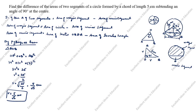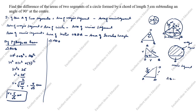Next, we will find the value of OD. Again, we will use Pythagoras theorem on triangle ADO. OA is 5 by root 2, which is already calculated. We need to find OD. Since D is the midpoint of AB, AD equals DB equals AB/2 equals 5 divided by 2 centimeter. So AD = 5/2 centimeter.